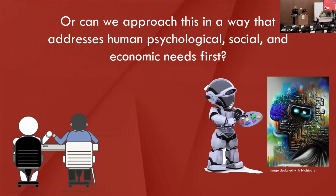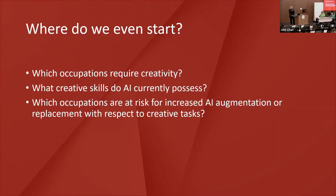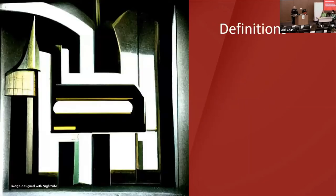My approach for this first foray uses three research questions: Which occupations require creativity? What creative skills does AI currently possess? And which occupations are at risk for increased AI augmentation or replacement because of creative tasks? I've used these questions to inform a qualitative content analysis of occupation and competency data as well as AI creative ability, hoping to identify areas of overlap. Given the interdisciplinary nature of these questions and the growing corpus of information, this project has required significant scoping.